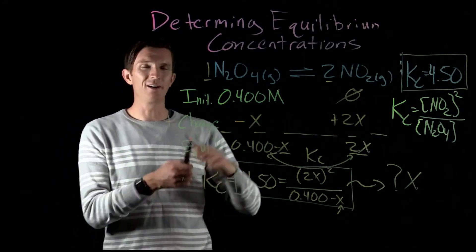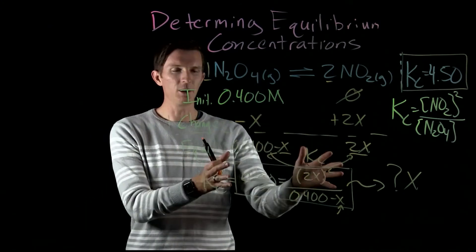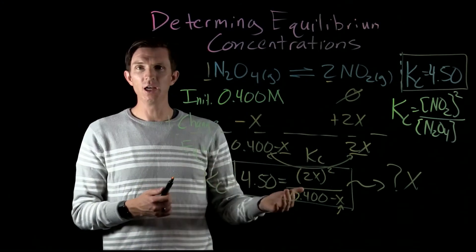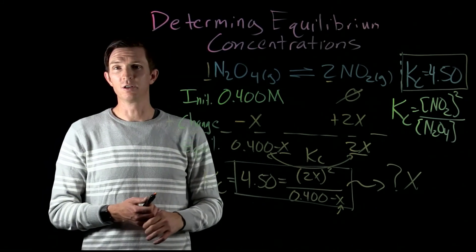So hopefully this gives us a good idea of how to set this up. The initial setup just leads us to something where we have to algebraically solve for our change, and then we see how that leads us back to what our equilibrium concentrations would be.